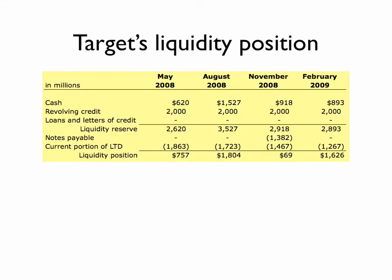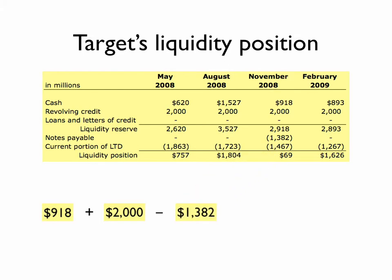Let's calculate Target's liquidity position for the quarter ending in November 2008. Start with cash of $918 million, add available revolving credit of $2 billion, subtract short-term debt of $1,382,000,000, subtract the current portion of long-term debt of $1,467,000,000, to get a liquidity position of $69,000,000.